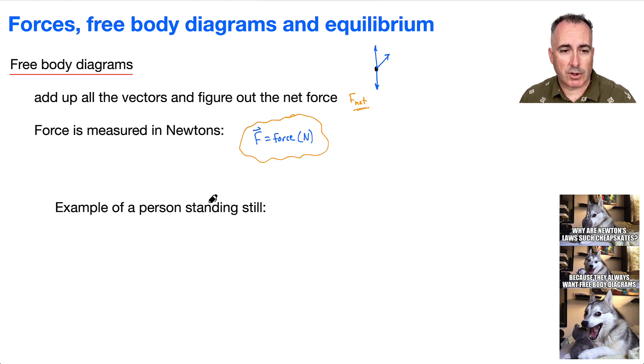Let's consider just a person standing still. Here's you standing on the ground, for example. What kind of forces are acting on you? With a free body diagram, we draw forces coming directly from the center of someone.